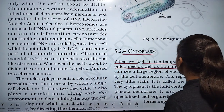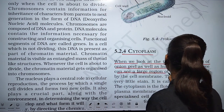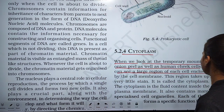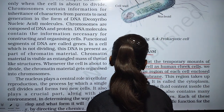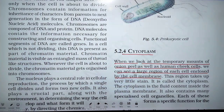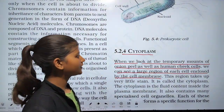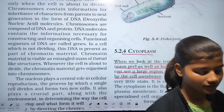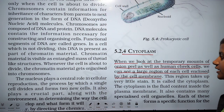When we look at the temporary mounts of onion peel as well as human cheek cell, we can see a large region of each cell enclosed by the cell membrane.